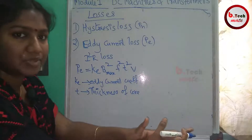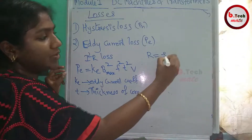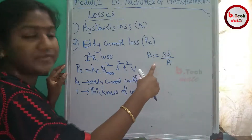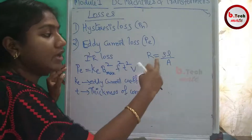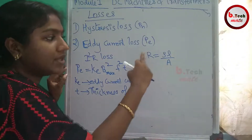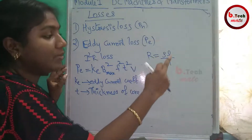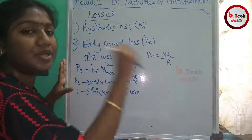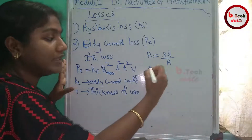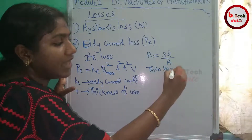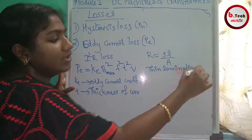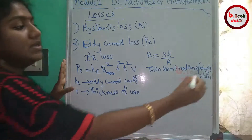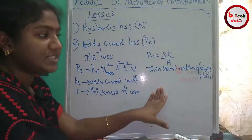To reduce eddy current losses, we increase resistance using the formula R = ρl/A, where A is the area of the conductor, l is the length, and ρ is the resistivity. By increasing resistance, we reduce the current and thus the losses. What we use is thin laminations or sheets of material to achieve this.